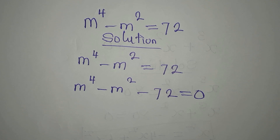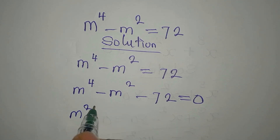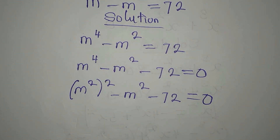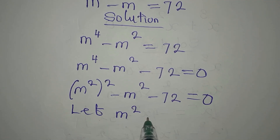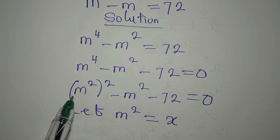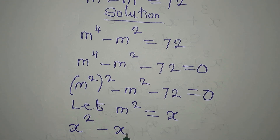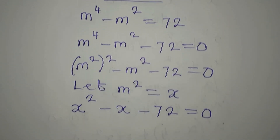Now I can work on this to get m to the power of 2, all to the power of 2, minus m to the power of 2 minus 72 equals zero. Here is what I want to do: let m to the power of 2 be equal to x. This way we'll replace our m squared with x, so we write x in place of it. The square comes down, then minus m squared becomes x, and then we have minus 72, giving us zero.